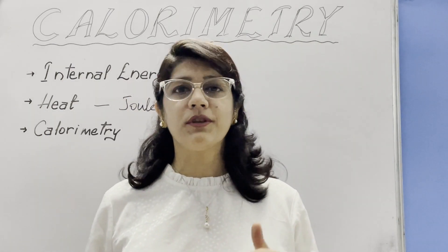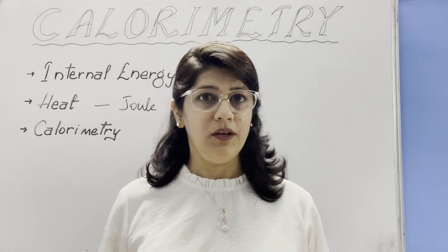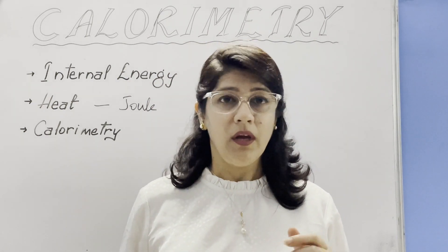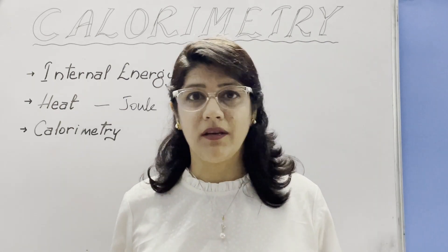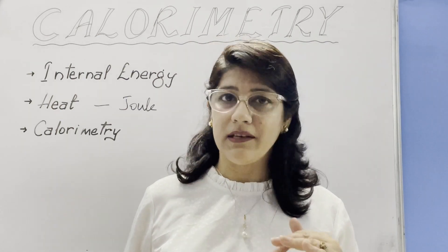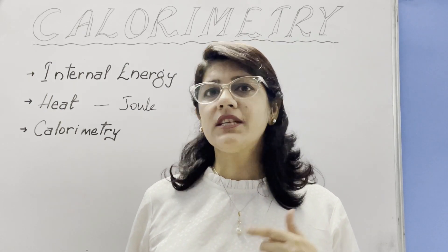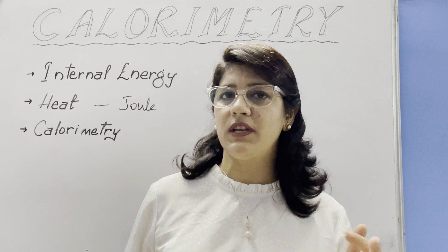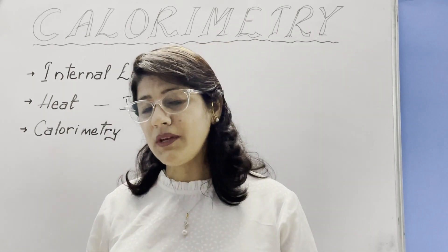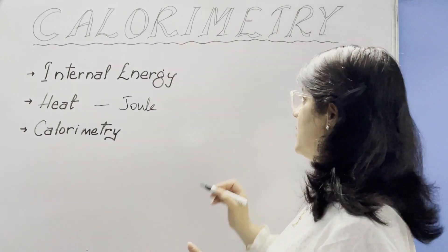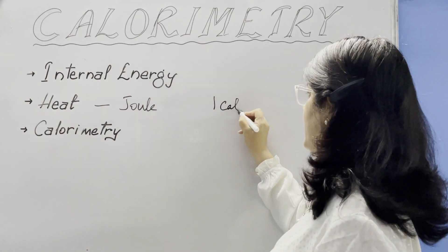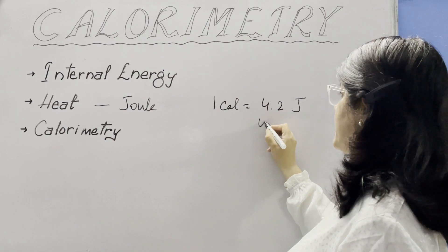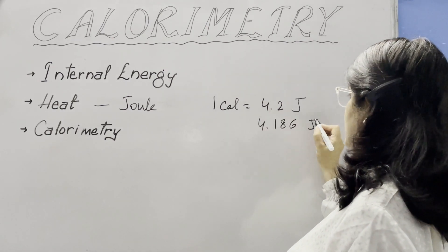One commonly used unit of heat is the calorie. You might have heard people say they cannot eat a gulab jamun because it has so many calories. A calorie is defined as the heat energy required to raise the temperature of 1 gram of water from 14.5 to 15.5 degrees Celsius. The relation between SI unit and calorie is: 1 calorie equals 4.2 Joules, or more precisely 4.186 Joules.